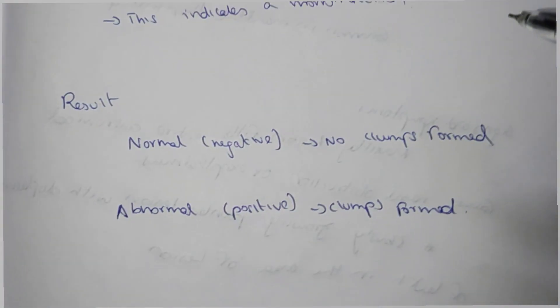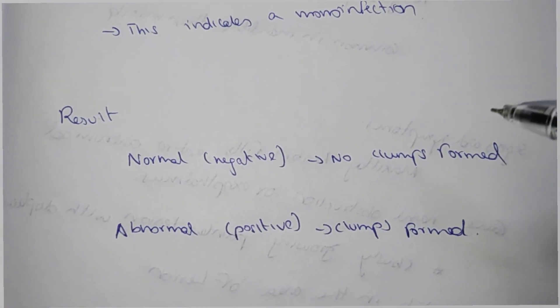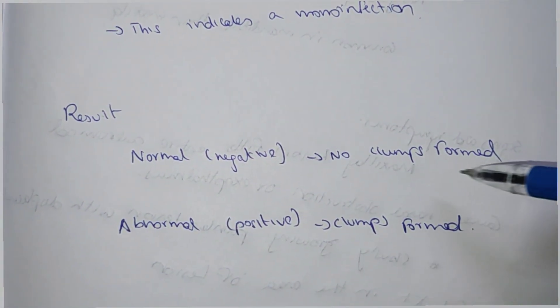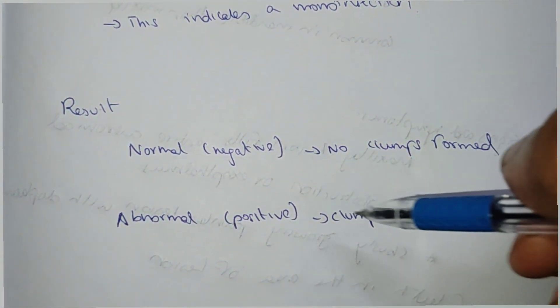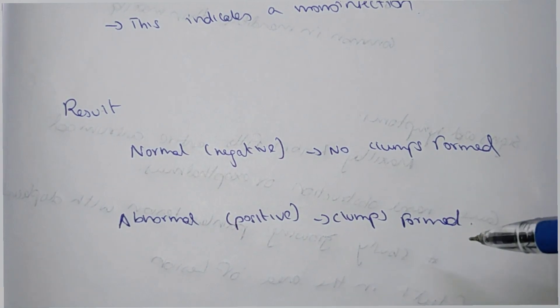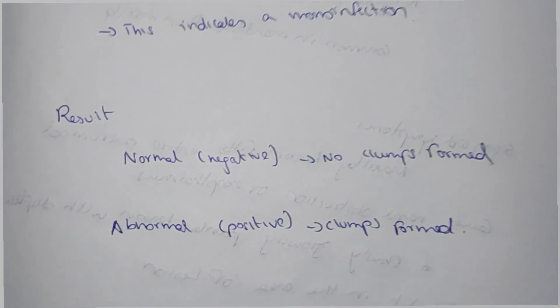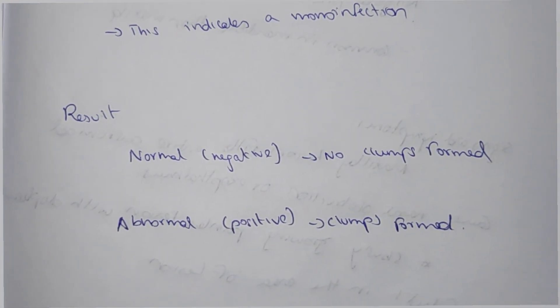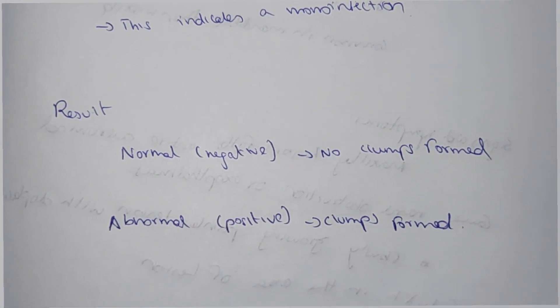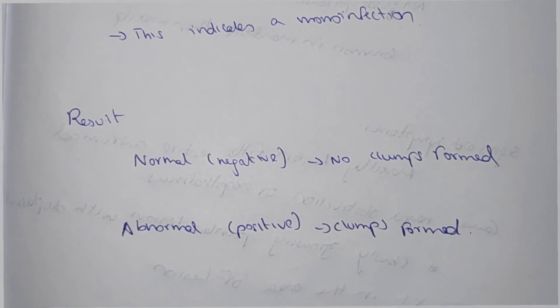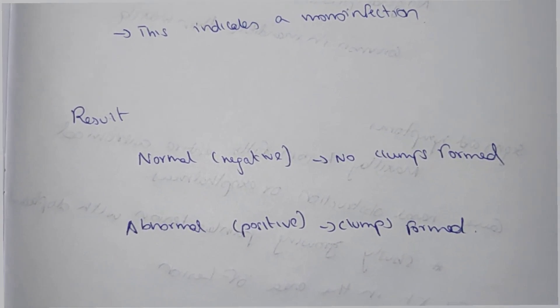For the infectious mononucleosis result: the normal result is negative — no clumps are formed. The abnormal result is positive — clumps are formed. That's all about the Paul-Bunnell test. Thank you; if you like this video please like, share, and subscribe to my YouTube channel.